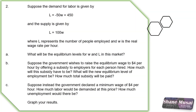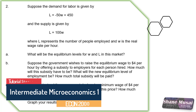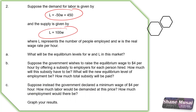We're here at question 2 in tutorial sheet 4. This question says: suppose the demand for labor is given by this equation here, and the supply of labor is given by this equation here, where L represents the number of people employed and W represents the real wage rate per year. Part A says: what will be the equilibrium level for wage and labor in the market?